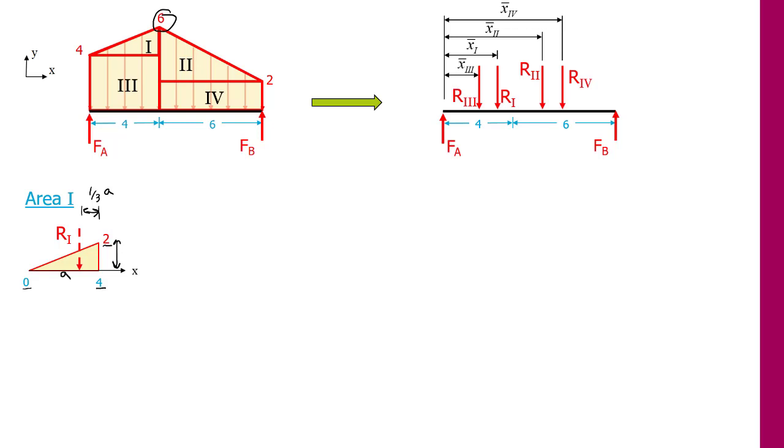So if we use that result, we can see in our case that A would be 4 minus 0, and we will get that x-bar 1 is 2/3 times 4, which is 8 over 3 meters. Now we also know that the resultant is the area of this triangle, which will just be 1/2 the base times the height, which will give us 1/2 the height, which is 2, times the base, which is 4, which gives us 4 kilonewtons.